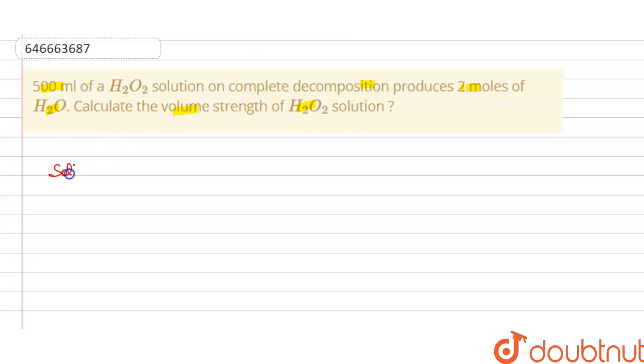So the solution of this question is, we know that volume strength of H2O2 solution is equal to 5.6 multiplied by normality. And 5.6 is the standard value and this is multiplied by normality.